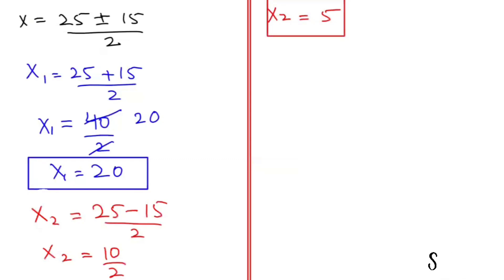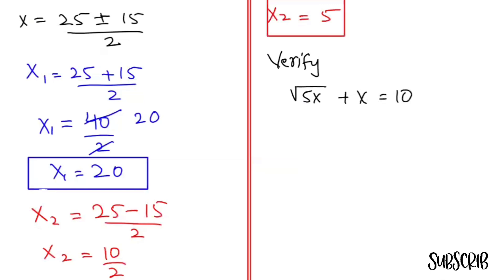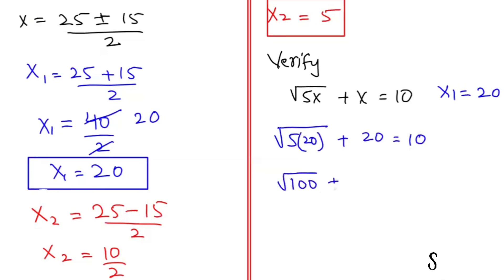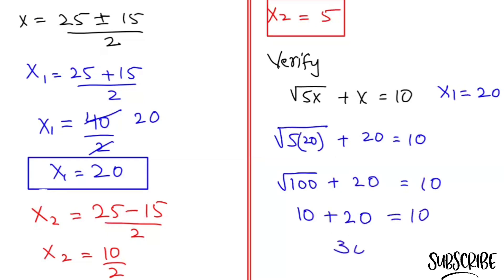Now I am going to verify my answers. The original equation is root(5x) plus x equals 10. For x1 equals 20: root(5 times 20) plus 20 equals root(100) plus 20 equals 10 plus 20 equals 30, which is not equal to 10. So the x1 value is rejected.